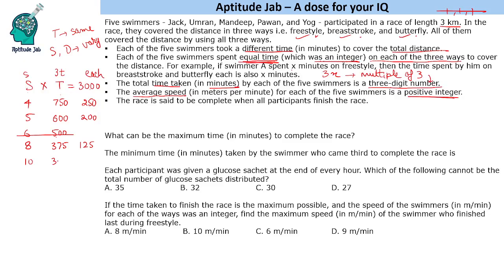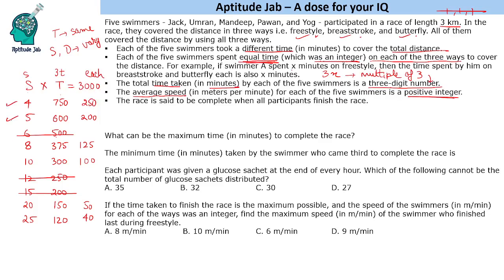Continuing: speed 9 is not a factor. Speed 10 gives 300, meaning 100 minutes per phase. Speed 12 gives 250, which is not a multiple of three. Speed 15 gives 200, also not divisible by three. Speed 20 gives 150. Speed 25 gives 120, meaning 50 and 40 minutes per phase respectively. So the valid possible total timings are: 750, 600, 375, 300, 150, and 120 minutes.